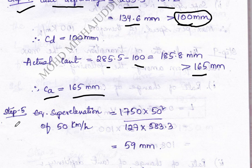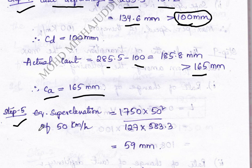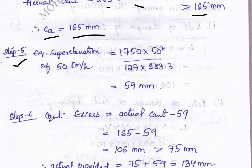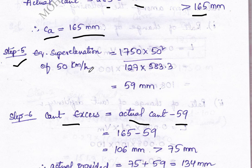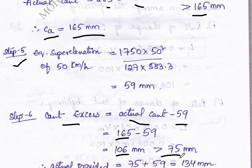Step five: calculate equilibrium super elevation for 50 km/h using the same formula as steps two and three. Step six: calculate cant excess, which equals actual cant minus equilibrium super elevation for 50 km/h. We get 106 mm, which is greater than 75 mm. As per IRC standards, the maximum cant excess is 75 mm, so we take 75 mm.